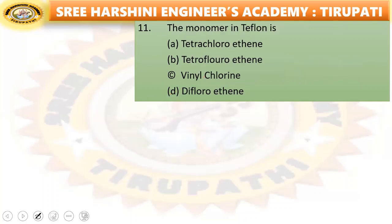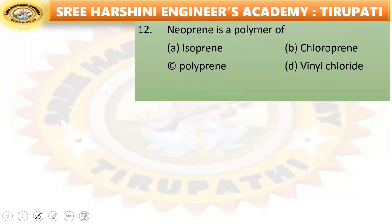Next: the monomer in Teflon is tetrachloroethane or tetrafluoroethylene? The monomer in Teflon is tetrafluoroethylene. That is the right answer.